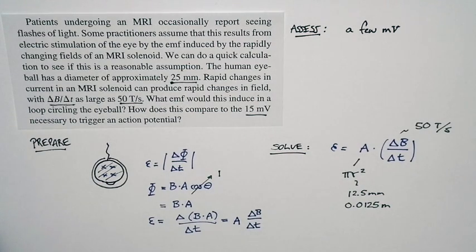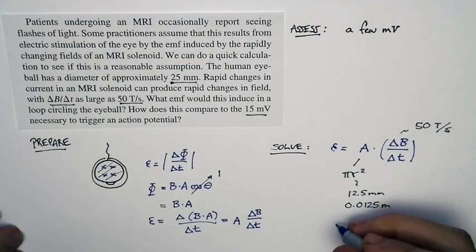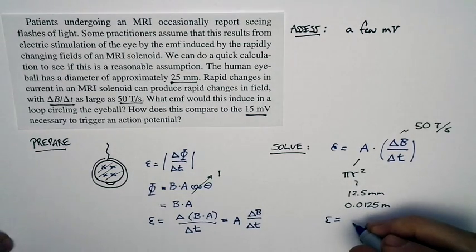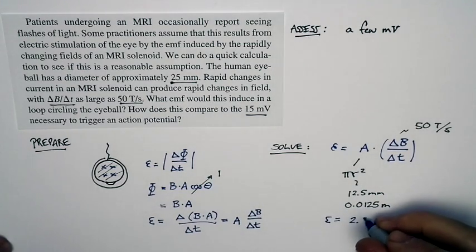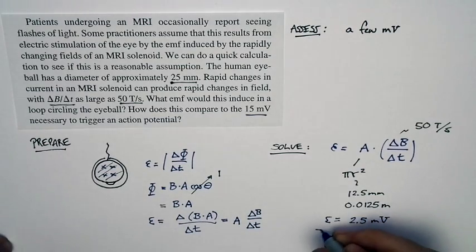Delta B over delta T is 50 teslas per second. We have everything we need in order to calculate. And when we do, the result that we get for the EMF is 2.5 millivolts.